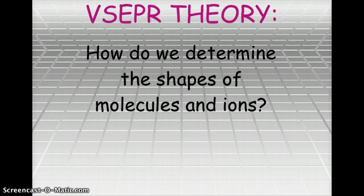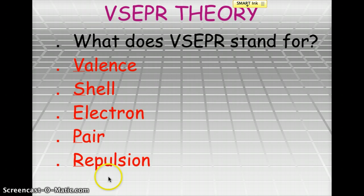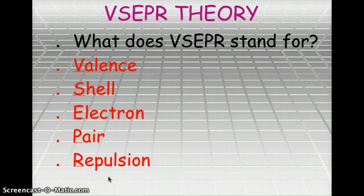This VSEPR theory is how we determine the shapes of molecules and ions — basically whether it's a straight molecule, a bent molecule, if it's going to form a pyramid, and so on. VSEPR stands for Valence Shell Electron Pair Repulsion. It describes how electrons in the valence shell create repulsion that allows for the formation of molecules, and based on those repulsion activities you get certain bond angles that create the shape of the molecule.